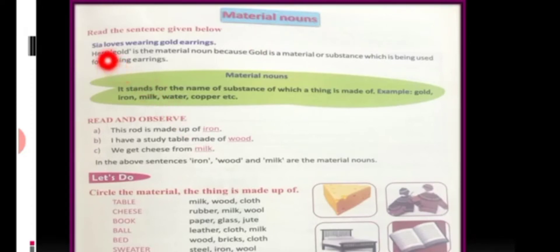Let's read this sentence. Friends, Sia loves wearing gold earrings. Earrings are there, but they are made up of gold. So, the material used to make earrings is gold. So, gold is the material noun.